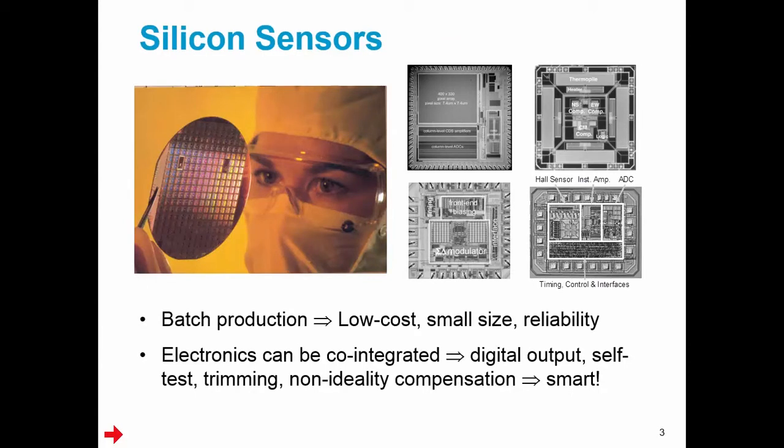Most smart sensors are made from silicon. Why? Well because this allows them to be manufactured on wafers in batches of several tens of thousands at a time. As a result smart sensors can be small, reliable and most importantly low cost.